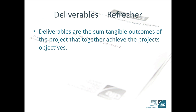There are two different types of deliverables: management and product. Typical management deliverables will be the terms of reference, the project plan, and the communications plan, whereas product deliverables will be the component parts required to deliver the objectives. Deliverables are tangible, measurable and descriptive.